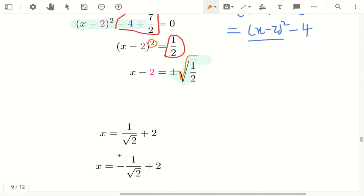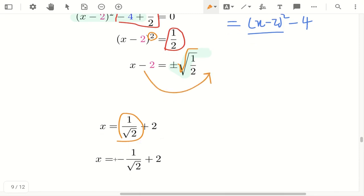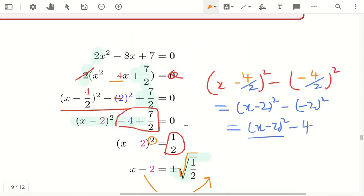So therefore, I have 1 over square root half, plus 2, because I bring this over, and then minus as well. So, I need to have two answers, quadratics, you have two answers. This is the two answer I'll get.